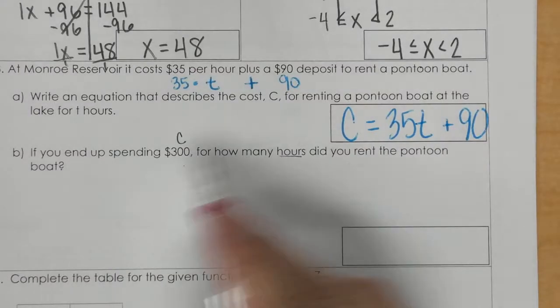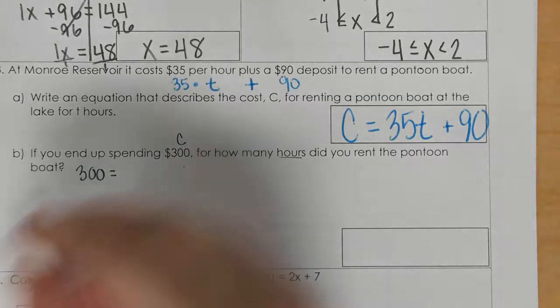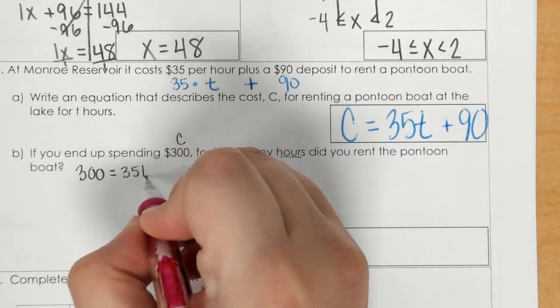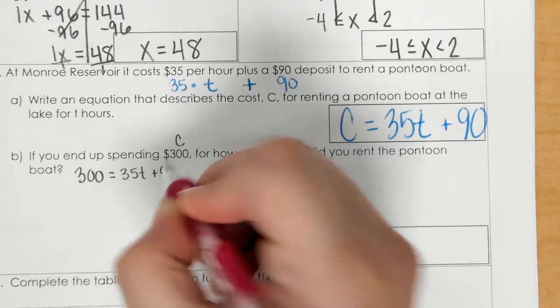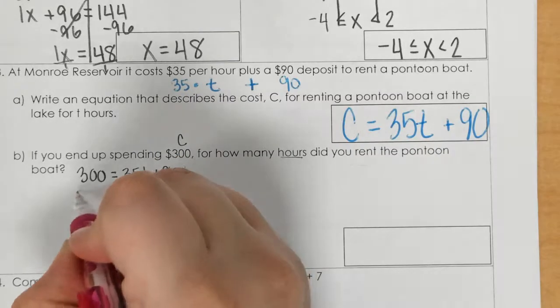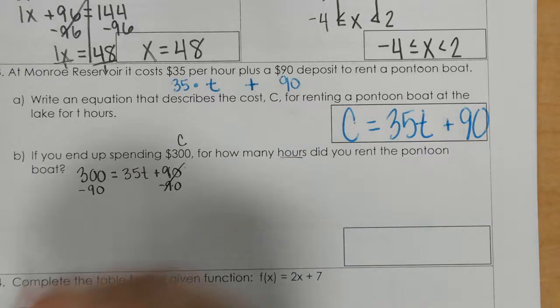And so, I'm going to plug 300 in for C, and solve the equation like a two-step. So, if I subtract 90, we get 210.